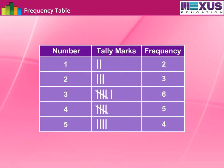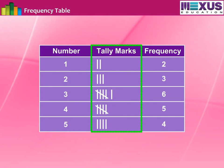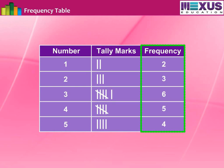A table which represents the data in the form of three columns — the first column showing the variable or number, the second column showing the values of the variable and tally marks, and the third column showing their frequencies — is called a frequency table.